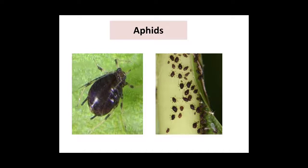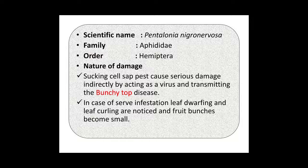The next pest is Aphids of banana. The scientific name is Pentalonia nigronervosa. It belongs to family Aphididae and order Hemiptera. Nature of Damage: sucking of cell sap causes serious damage indirectly by acting as a vector and transmitting the Bunchy Top disease. This is the important point — Pentalonia nigronervosa transmits Bunchy Top disease in banana. In case of severe infestation, leaf dwarfing and leaf curling are noticed and fruit bunches become small.